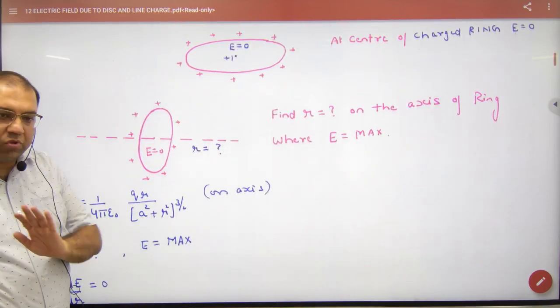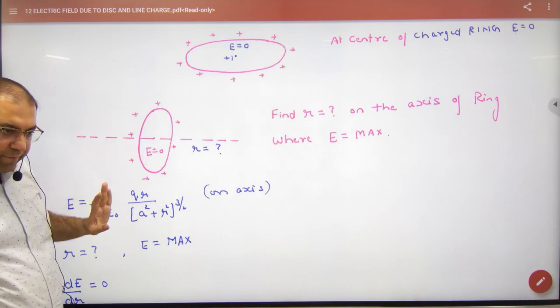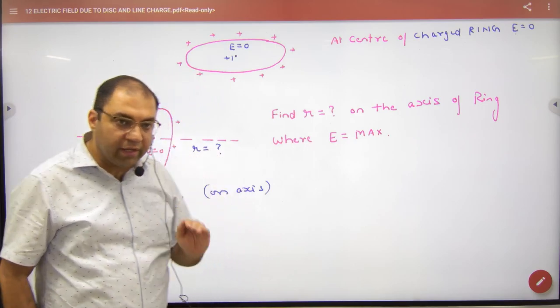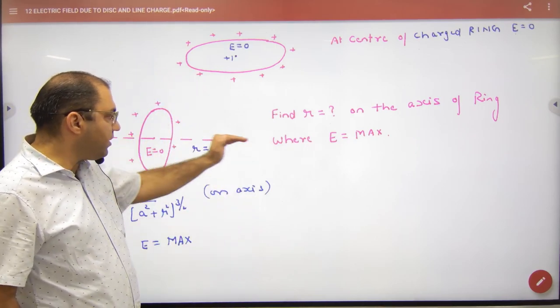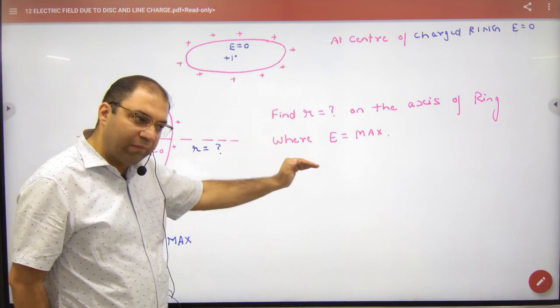The next question will come. If this is a ring and the center of E is zero, and if I go very far from the ring, then E will be zero. If I go right from the ring, then E will increase, and then a little bit, it will be reduced.